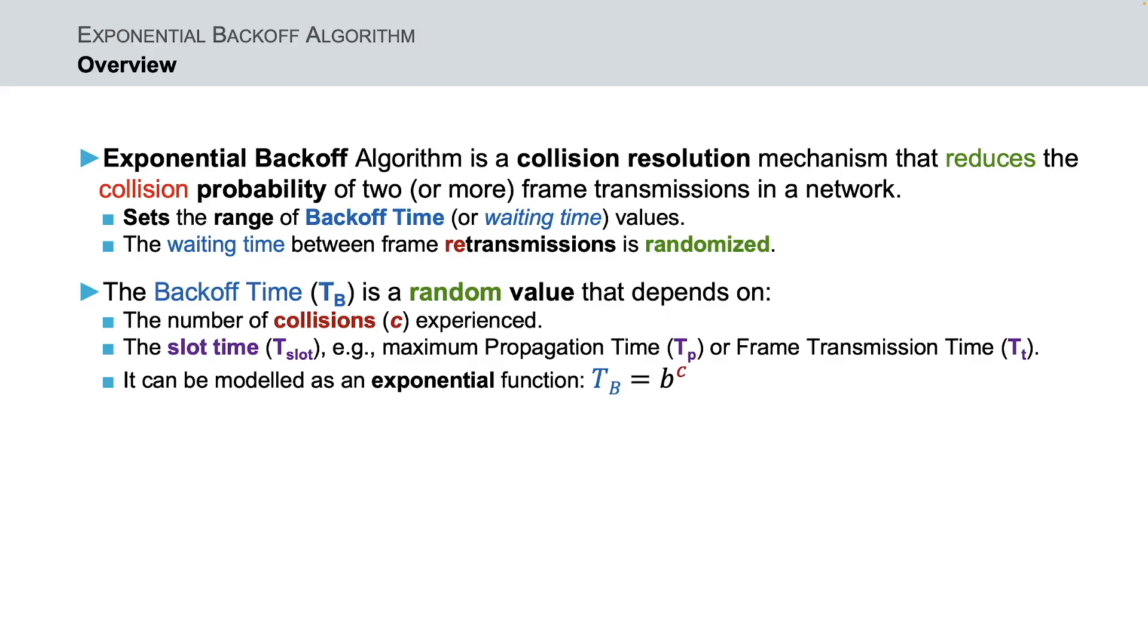Back-off time can be modeled as an exponential function as it can be seen here, where Tb is the back-off time, b is the multiplicative factor or base, and c is the number of retry attempts observed. Finally, the value of c is incremented each time a retry attempt is observed, leading thus to an exponential rise in delay.